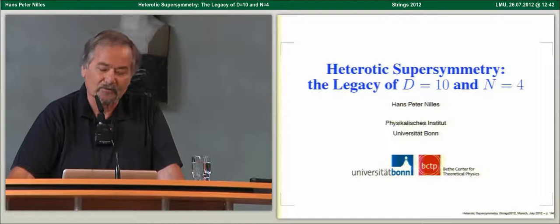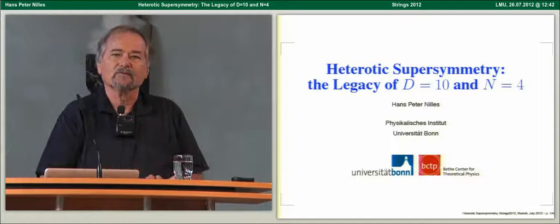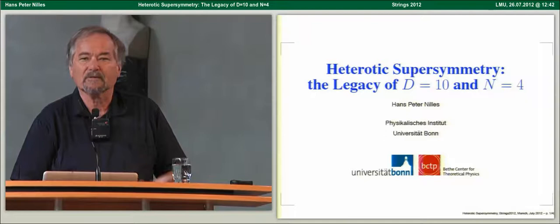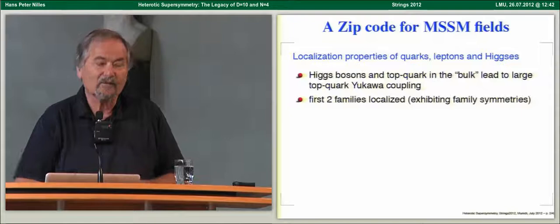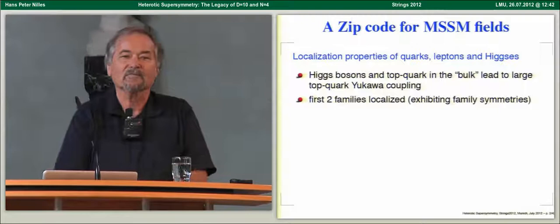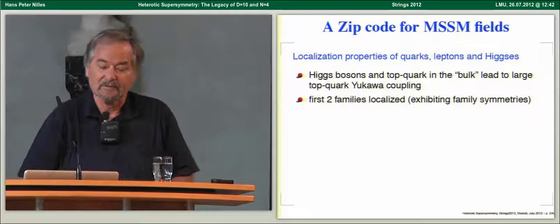When you think in terms of string theory and making connections to the real world in four dimensions, a lot of the parameters in the four-dimensional theory are given by properties of the theory in extra dimensions. Some of those properties are the localization of quarks and leptons. What I give you today will be a zip code for the quarks, leptons, and Higgs bosons — where do they live in extra dimensions? Is the electron spread out, wrapped on a certain cycle, or sitting in some corner of space?